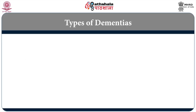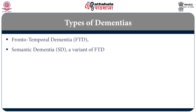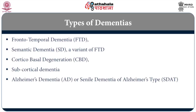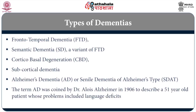These are some of the different types of dementia: Frontotemporal dementia (FTD), Semantic dementia (SD) which is a variant of FTD, Corticobasal degeneration, subcortical dementia, and Alzheimer's dementia, also known as senile dementia of Alzheimer's type (SDAT) or AD. The term Alzheimer's disease was coined by Dr. Alois Alzheimer in 1906 to describe a 51-year-old patient whose problems included language deficits, but the focus of this module is semantic dementia.